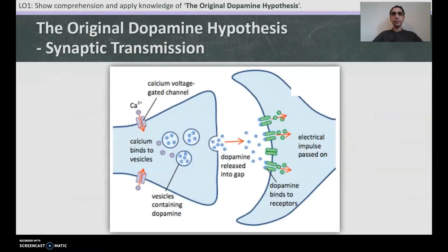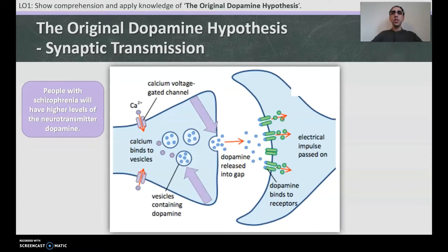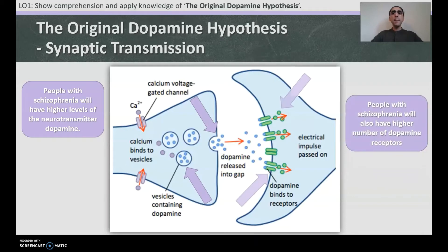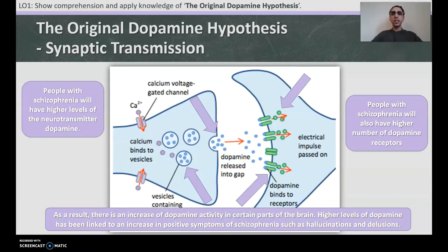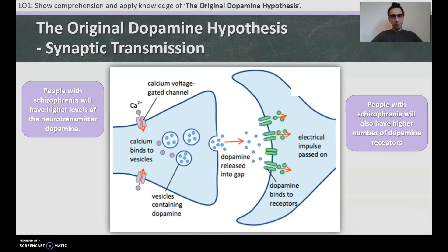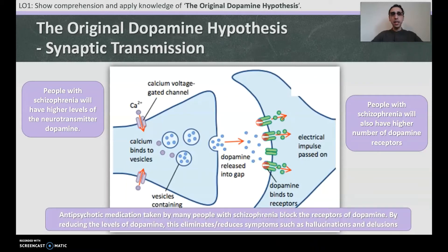Here is a diagram of synaptic transmission. You can see the axon terminal of one neuron on the left and the dendrite of the receiving neuron on the right. The neurotransmitter sends a chemical message through the synapse, which is then converted into an electrical impulse. People with schizophrenia have higher levels of dopamine being shared across the synapse, and also higher numbers of dopamine receptors. This increased dopamine activity is linked to positive symptoms such as hallucinations and delusions. Antipsychotic medication blocks the dopamine receptors, eliminating or reducing these symptoms.